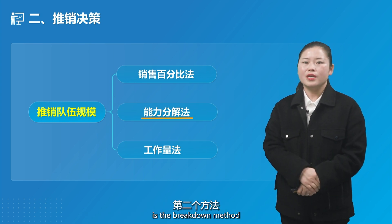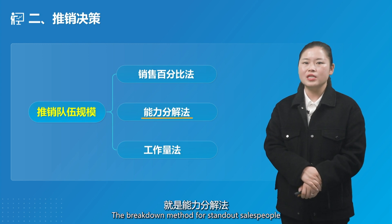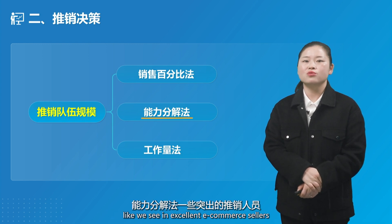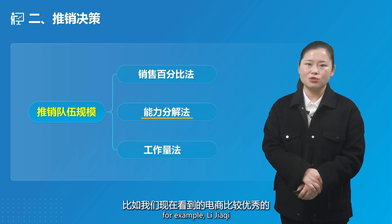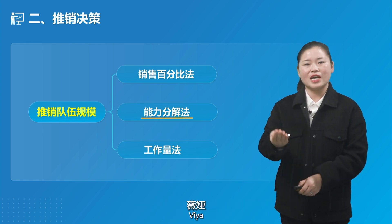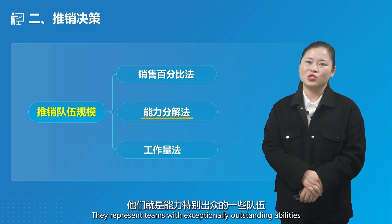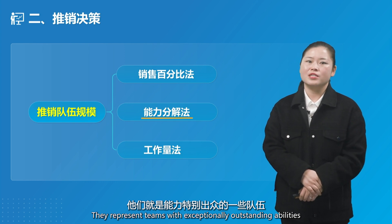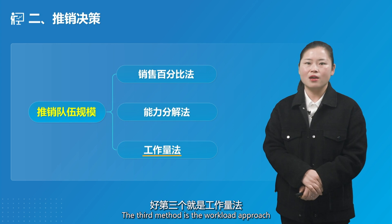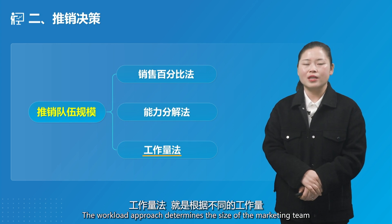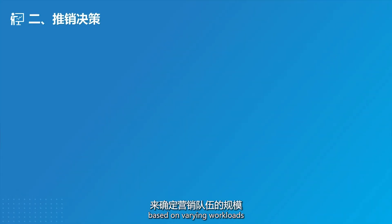The second method is the breakdown method, which applies to standout salespeople — like excellent e-commerce sellers such as Li Jiaqi and Viya — representing teams with exceptionally outstanding abilities. The third method is the workload approach, which determines the size of the marketing team based on varying workloads.